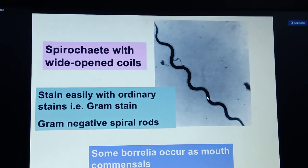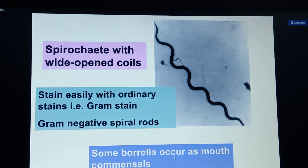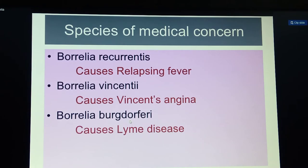As shown by the arrow mark, it looks like a spiral rod-like structure when stained using the gram staining technique. Some Borrelia occur as mouth common cells, mostly affecting oral regions. The species of medical concern are Borrelia recurrentis, Borrelia vincenti, and Borrelia burgdorferi.